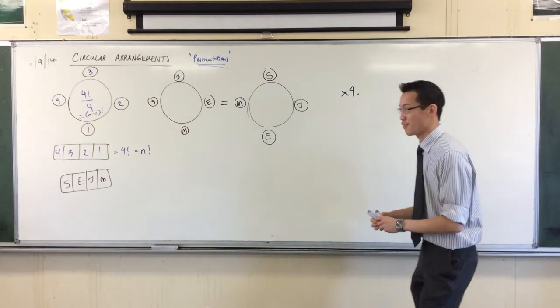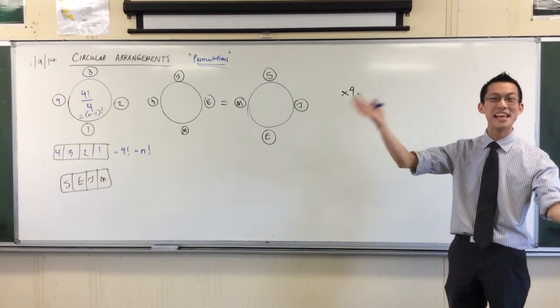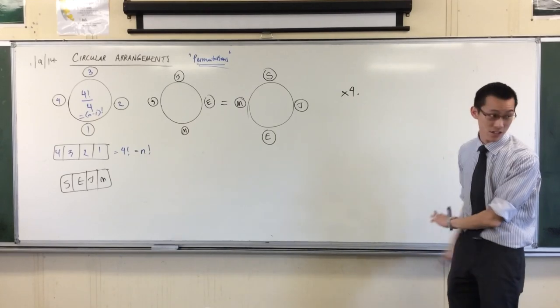If you had 12 people to sit around an Asian banquet table, then there would be 12 minus one, 11 factorial ways to arrange them. Make sense?